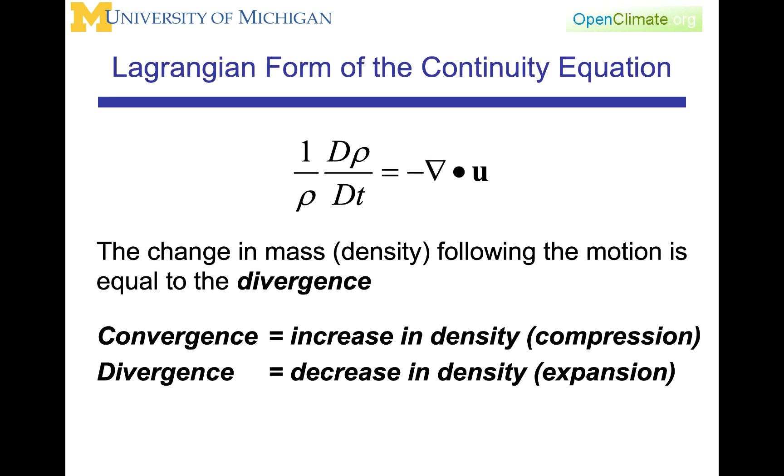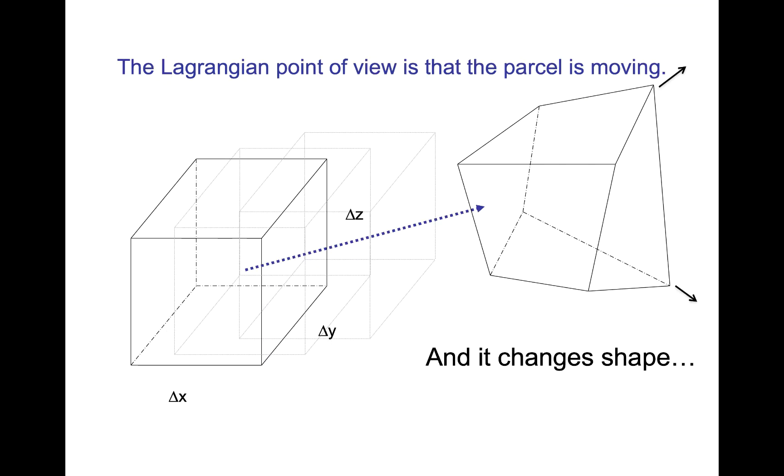This gives you the Lagrangian form of the continuity equation, which is the change in mass density following the motion is equal to the divergence. So the divergence is a decrease in density, and a convergence is an increase in density. The minus sign in this equation is something that you will need to pay attention to. In this figure of the moving parcel, I've drawn the little arrows over there on the right to show this idea of the shape changing, in this case, as the velocity along that interface diverges.